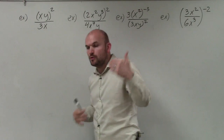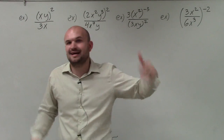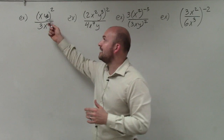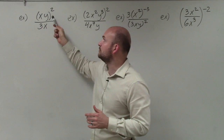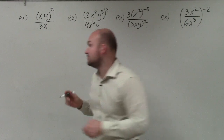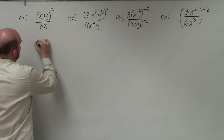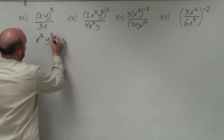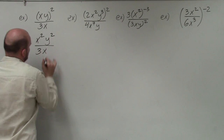The first thing we do when simplifying our expression is we want to get rid of the parentheses. So we're going to apply the power to product rule by distributing the two to our product of x and y. In this case, I'll now have x squared over y squared, divided by 3x.